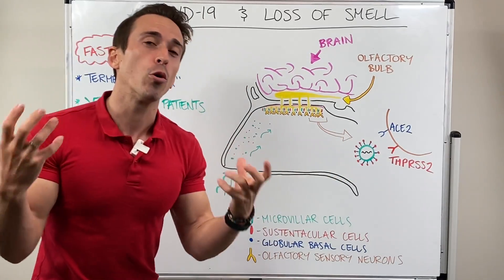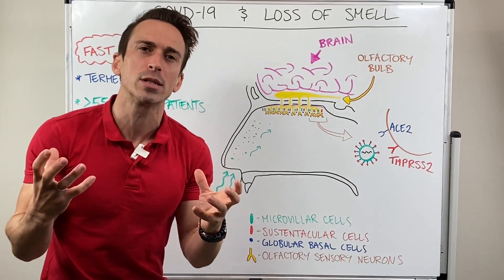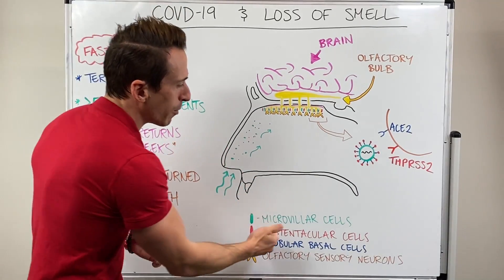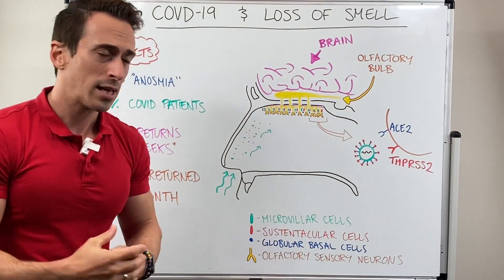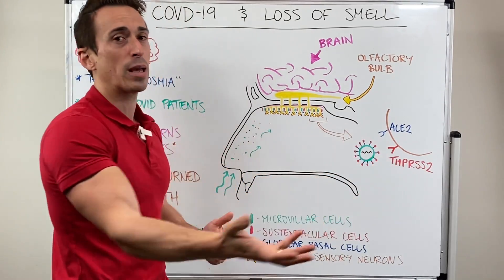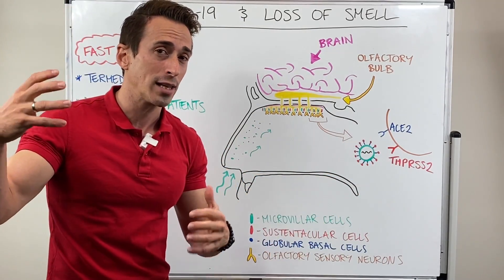However, the supporting cells do, or at least a subset of those supporting cells. For example, the microvilla cells, the sustentacular cells, and the globular basal cells tend to express ACE2 and TMPRSS2 relatively highly compared to others.